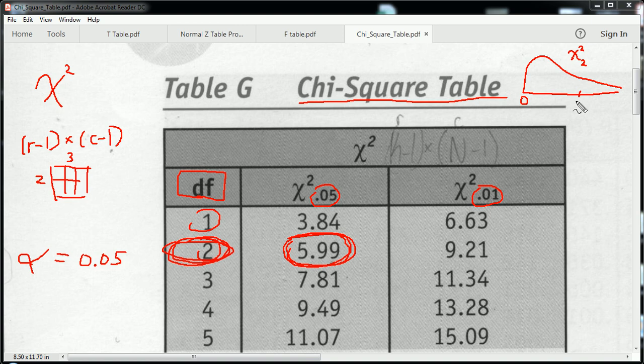And what this value is, is the value such, so 5.99, such that this percent of chi-square values are greater than this. So this is 0.05, so this would have to be 0.95, because they need to sum up to 1.